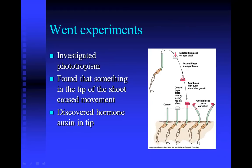A long time ago, a scientist named Wendt — in the late 1800s — wanted to investigate phototropism, which Charles Darwin was also interested in. What he did was cut the tip off a growing shoot, placed it on a porous agar block, and that porous agar block acted like a sponge and sucked out any chemicals that were in the tip of that plant. He then took that porous agar block and placed it on a plant shoot that had its tip cut off. He noticed that some kind of chemical in that agar block stimulated cell growth and caused the plant to grow — and that was how the first plant hormone, auxin, was discovered.